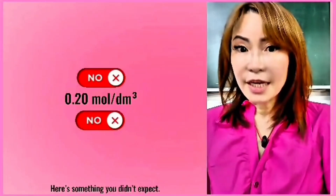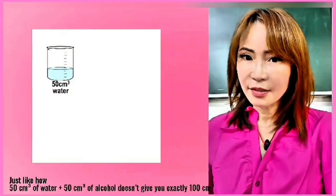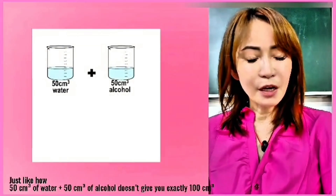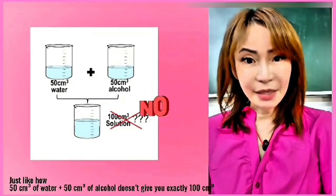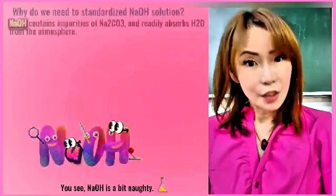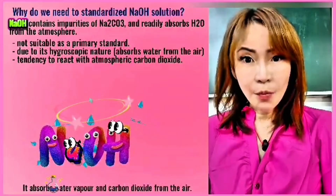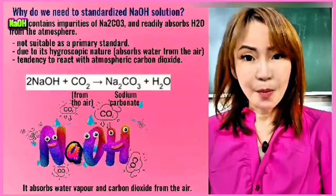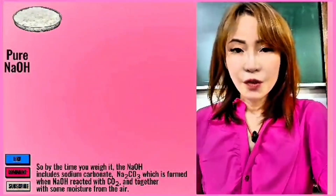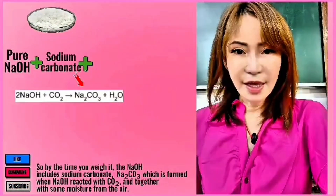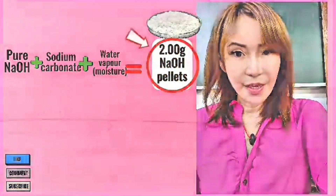Here is something you didn't expect. Just like how 50 cm³ of distilled water mixed with 50 cm³ of alcohol doesn't give you exactly 100 cm³, NaOH is a bit naughty — it absorbs water vapour and carbon dioxide from the air. By the time you weigh the NaOH, it already includes sodium carbonate, which forms when NaOH reacts with CO₂, packed together with moisture from the air.